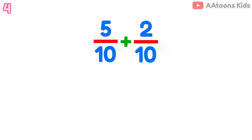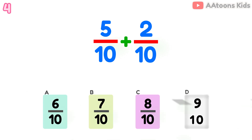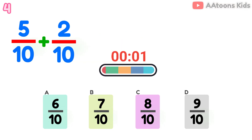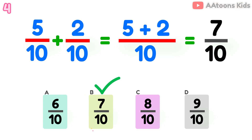Add the fractions: 5 over 10 plus 2 over 10. The answer is 7 over 10.